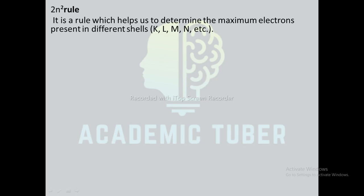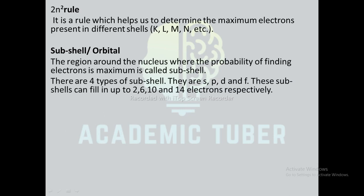2n² rule: it is a rule which helps us determine the maximum electrons present in different shells. Shells are represented by the letters K, L, M, N, etc. Sub-shell or orbital: the region around the nucleus where the probability of finding electrons is maximum is called a sub-shell or orbital. There are four types of sub-shells: s, p, d, and f. The sub-shells can fill up to 2, 6, 10, and 14 electrons respectively. So, the maximum electron-carrying capacity of the s sub-shell is 2, p is 6, d is 10, and f is 14.